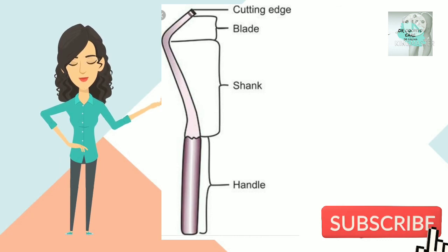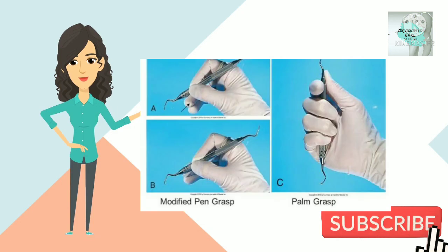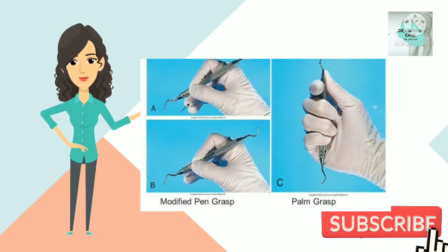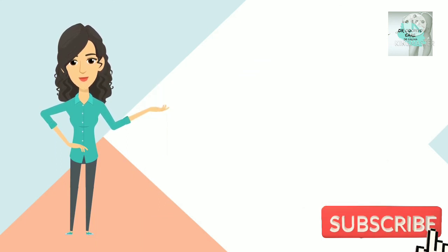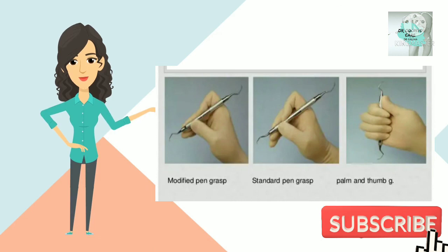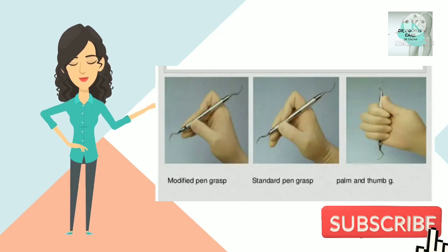Let's see the types of instrument grasp: pen grasp, modified pen grasp, inverted pen grasp, palm and thumb grasp, and modified palm and thumb grasp.